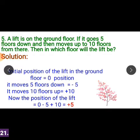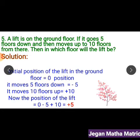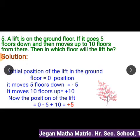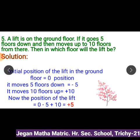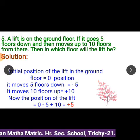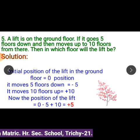The lift moving upward means it moves in the positive direction, so 10 floors up equals plus 10. Now, the current position of the lift equals 0 minus 5 plus 10. Minus 5 indicates the lift moves 5 floors down; plus 10 indicates the lift moves 10 floors upward. So minus 5 plus 10 equals plus 5. The lift will be on the 5th floor.